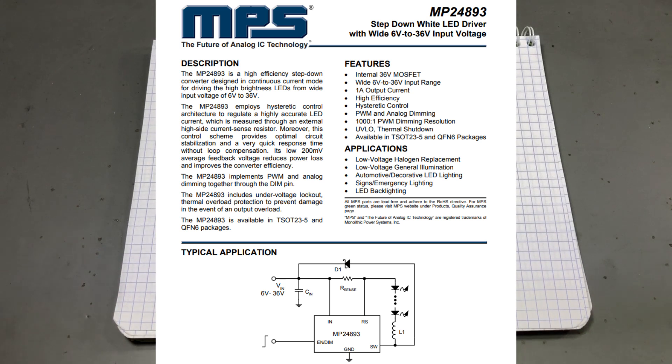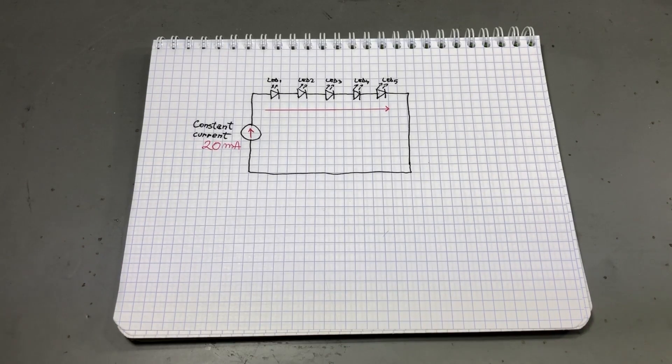So both problems are solved here. The LEDs are driven at a constant current and each LED will get the same current. You can also find this type of LED driver circuit in a step up configuration which will boost the voltage from a 5V rail for example. But this is the best method for driving LEDs if you care about running them at constant current.